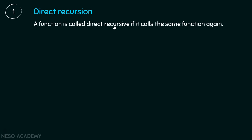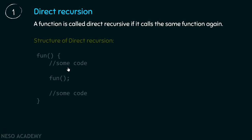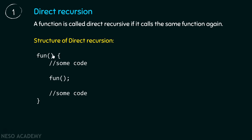A function is called direct recursive if it calls the same function again. Here is the structure of direct recursion. Suppose you have a function fun and inside this function, you are calling this function again. This is called direct recursive. Whatever programs we have encountered in the previous lectures are all direct recursive programs. Direct recursion is simple to understand.